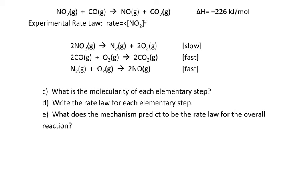The first thing I want to know is the molecularity for each step. Molecularity for an elementary step tells us how many molecules are physically colliding in that particular step. In the first step, there are two molecules, so that is a bimolecular reaction. In the second step, there are three molecules colliding — that is called a termolecular reaction. In the third step, there are two molecules again, so that's also bimolecular.